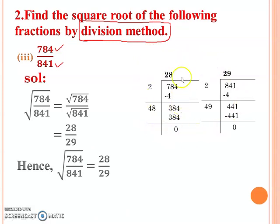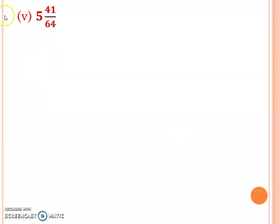Hence, the square root of 784 over 841 equals 28 by 29. In the division method, there are fewer steps because it solves easily in two or three steps. But in prime factorization, as the number of digits increases — for example, a seven-digit or nine-digit number — the prime factorization method becomes very lengthy.